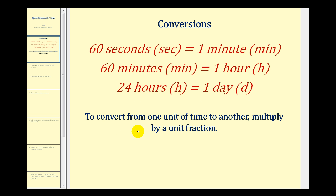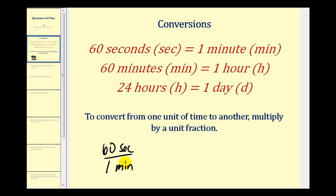In order to convert from one unit of time to another, we need to multiply by a unit fraction. A unit fraction is a fraction that's always equal to one. For example, sixty seconds over one minute is a unit fraction because these are equal to each other and therefore equal to one. So is one minute over sixty seconds — this is still equal to one.